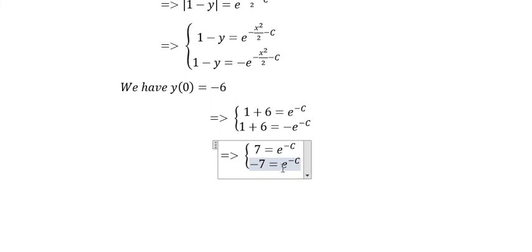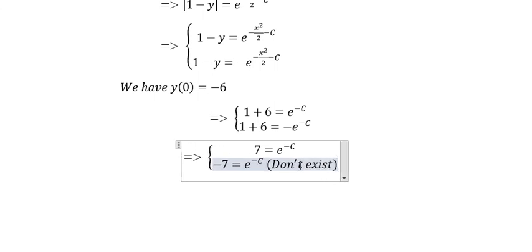As you can see, e to the power of any number cannot get about -7, so it doesn't exist. So in this one, we get C equals -ln(7).